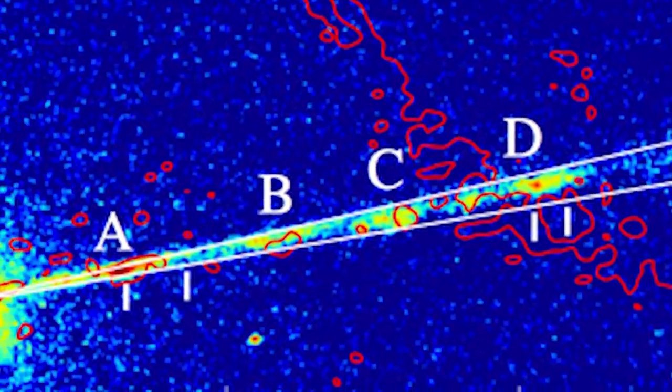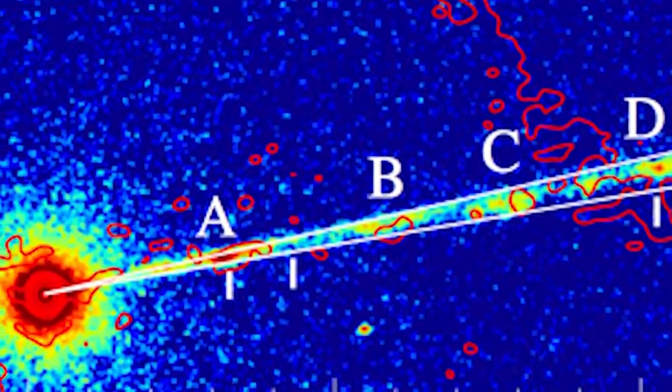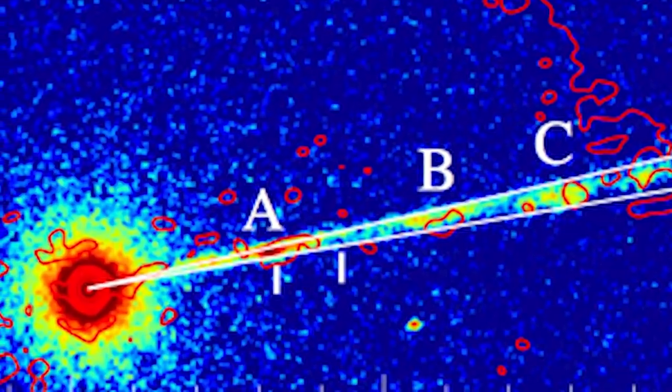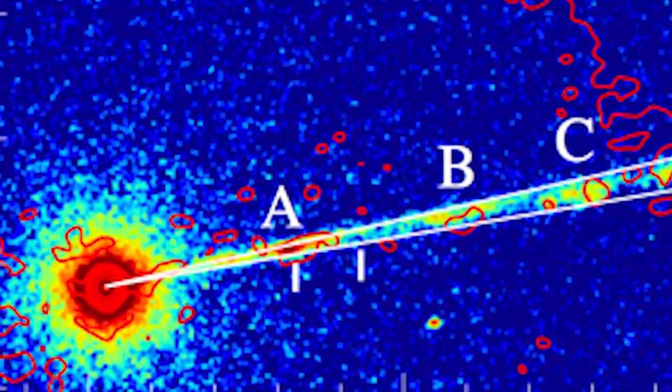The statement was proven correct in 2016 after the observatory released pictures of Pictor A, a double-lobed broad-line radio galaxy with the potential to wipe out entire solar systems.